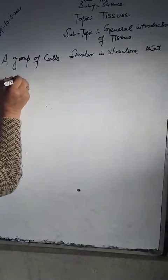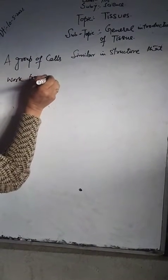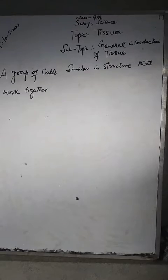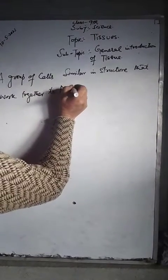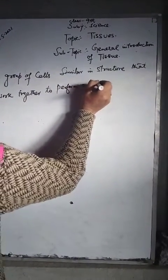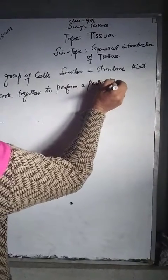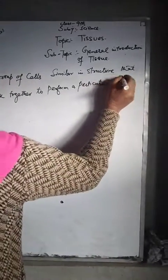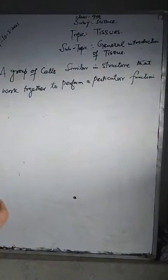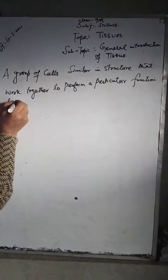A group of cells similar in structure that work together to perform a particular function forms a tissue.